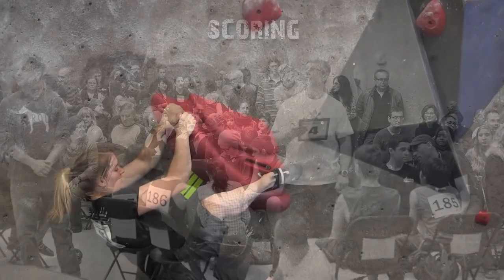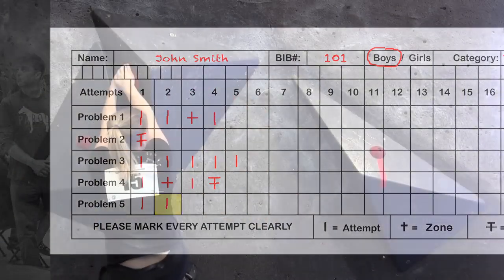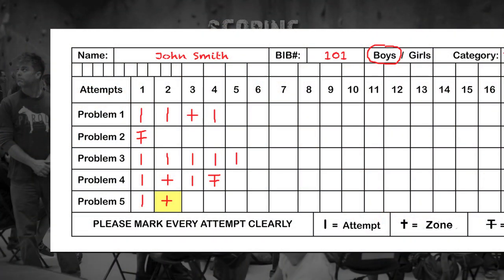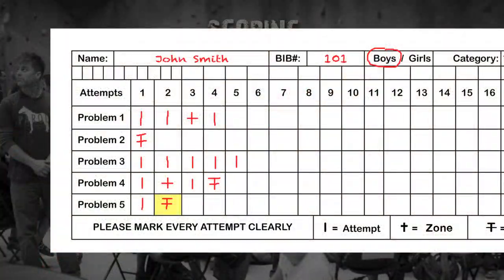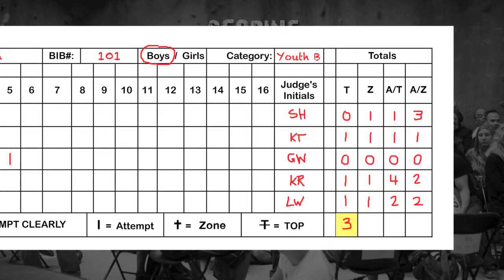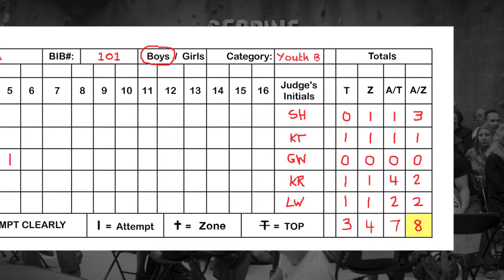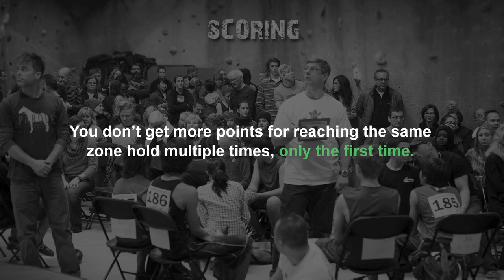Once a competitor's last point of contact has left the ground, the problem judge will mark down a lowercase 'l' under the attempt. If the competitor reaches the zone hold, the judge will turn the 'l' into a lowercase 't' under the same attempt. If the competitor then tops the problem, the judge will turn the lowercase 't' into an uppercase 'T'. At the end of each round, officials total up the tops, zones, and attempts. In this example, the competitor topped 3 of the 5 problems. They earned zone on 4 of the 5 problems. It took 7 attempts to get those tops and 8 attempts to get those 4 zones. Note, you don't get more points for reaching the same zone hold multiple times — only the first time counts.